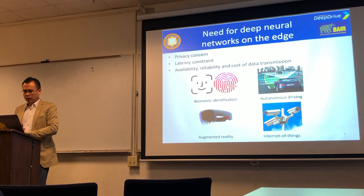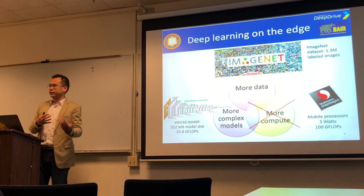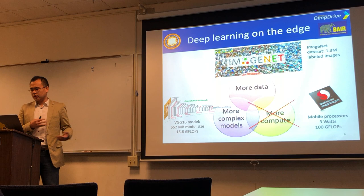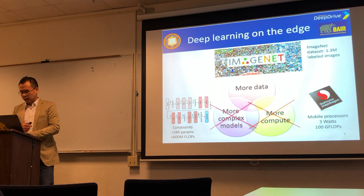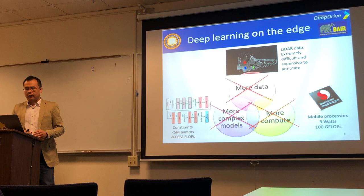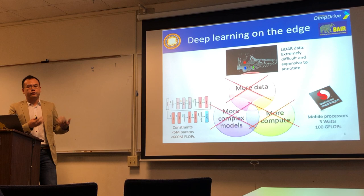However, when on the edge, many factors are no longer available. We no longer have powerful processors; instead, we must run neural networks on processors with limited compute and power budget. As a result, we can't use very powerful models — we have constraints on parameter size, FLOPs, or energy. And in many applications, getting data is very difficult; for example, LiDAR point cloud data is extremely difficult to annotate.